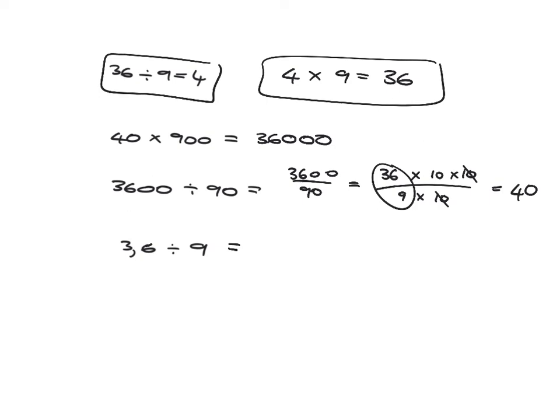This 3.6 divided by 9. Well, 3.6 is just 36 that's been divided by 10. So we know that 36 divided by 9 is 4. And this, we didn't start with 36. We started with 10 times less. So we also need to be 10 times less in our answer. So it's just going to be 1 up in the number, in that kind of place value table. So it's 0.4.